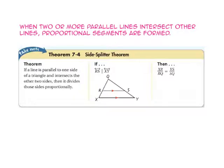When two or more parallel lines intersect other lines, proportional segments are formed. Take a look at theorem 7-4, the side splitter theorem.